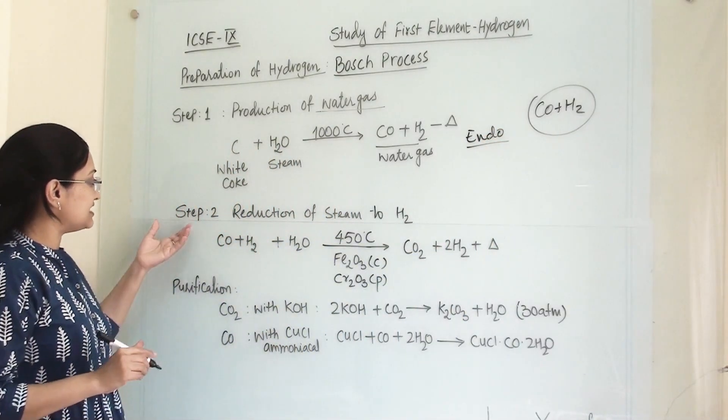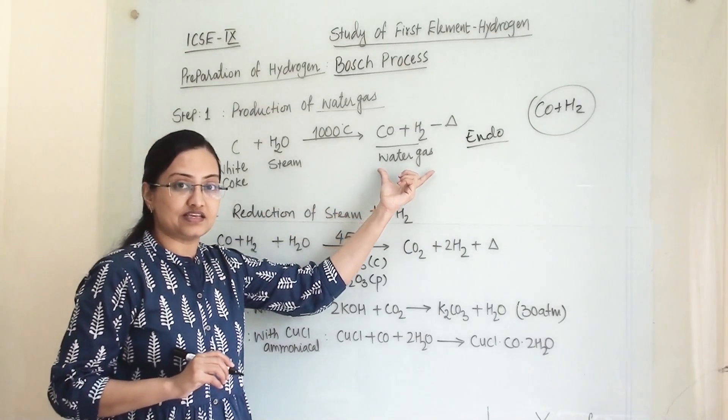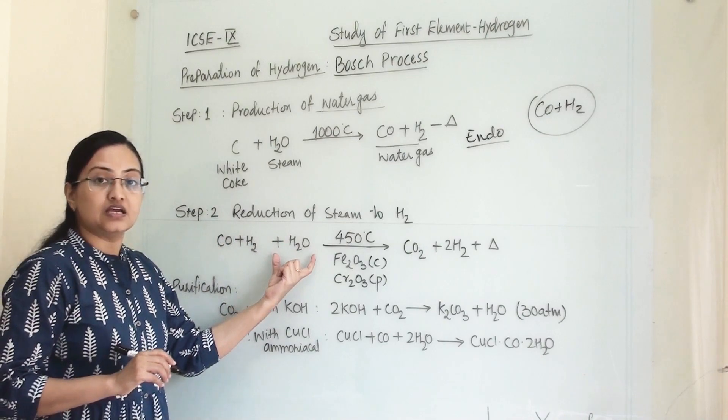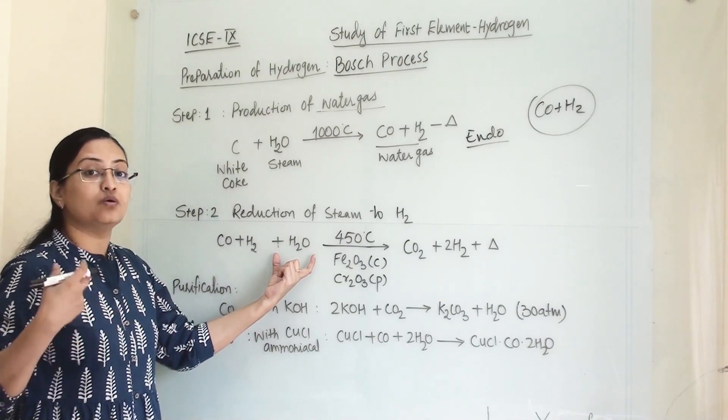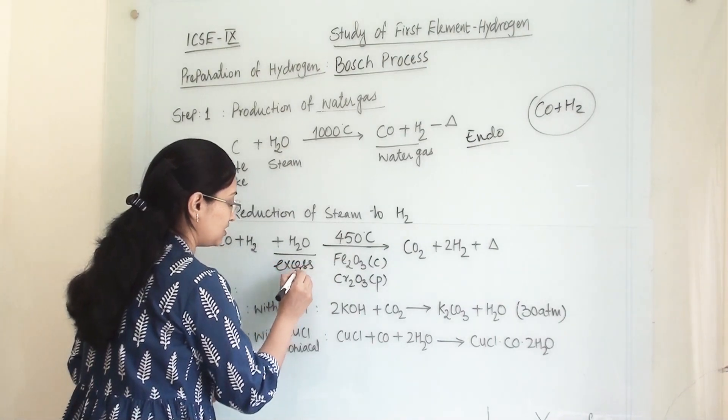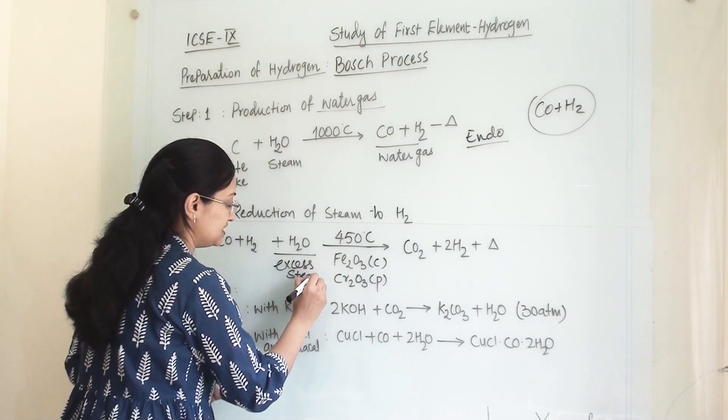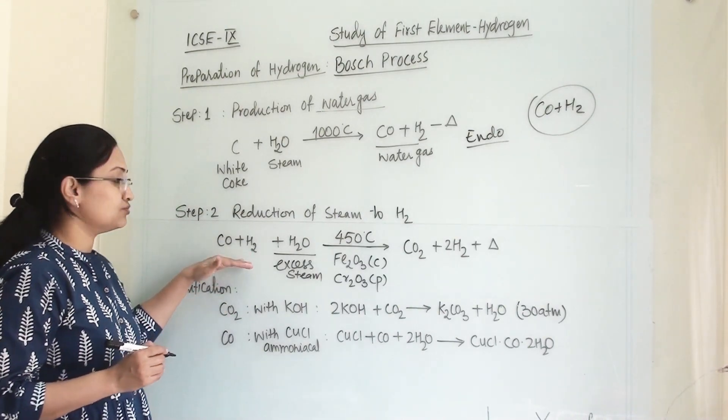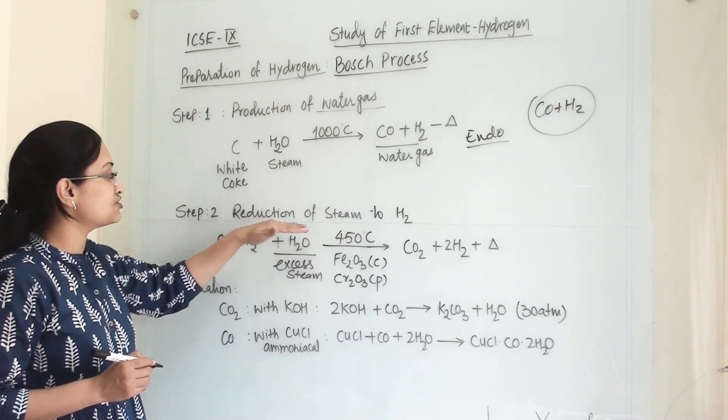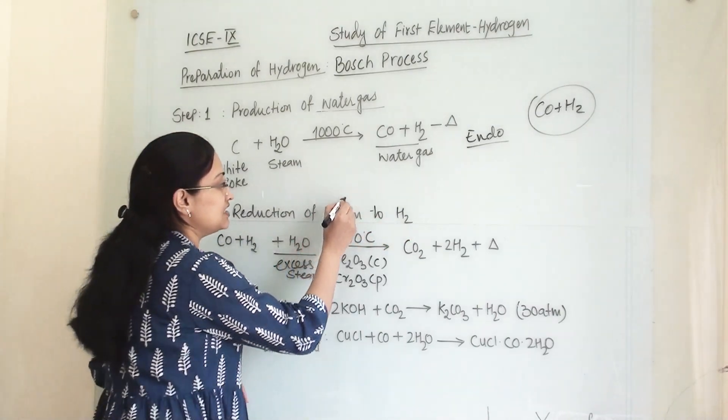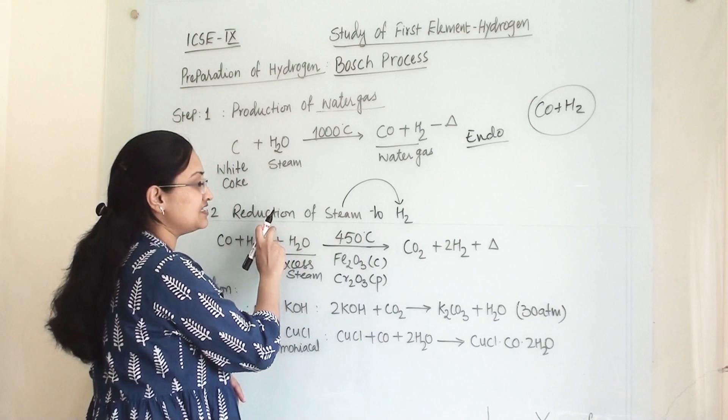Then in the second step, once this water gas has been generated, we are again going to react it with water in the form of excess steam. So more steam we are passing through this water gas. This step is reduction of steam to hydrogen. We are forming hydrogen from steam. Why is it reduction?